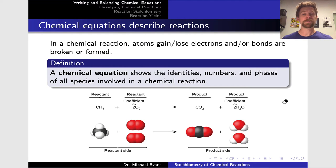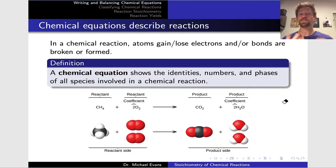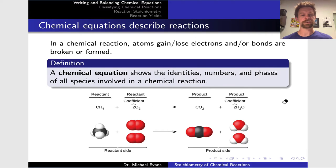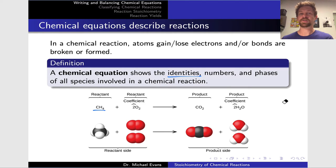Let's begin with chemical equations. In a chemical reaction, atoms gain or lose electrons and bonds are broken or formed. We represent that in terms of a chemical equation by writing the formulas of the reactants and products and listing numbers to indicate how they combine, and phase designators to indicate the state of matter of each substance in the reaction. An example is shown here — the identities of the species, the atoms or molecules or ions involved, are listed using their chemical formulas: CH4, O2, CO2, and H2O.